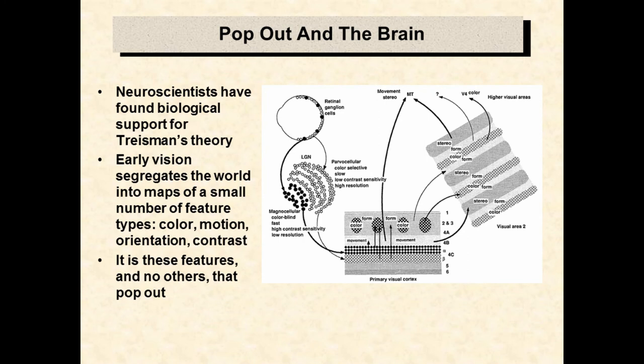Neuroscientists have found that there are independent pathways responsible for detecting simple features in early visual processing. It is these features, and only these features, that will produce pop-out. Treisman feels that one of her main contributions was proposing this sort of model before neuroscientists came up with it, as can be seen in the short video that follows.